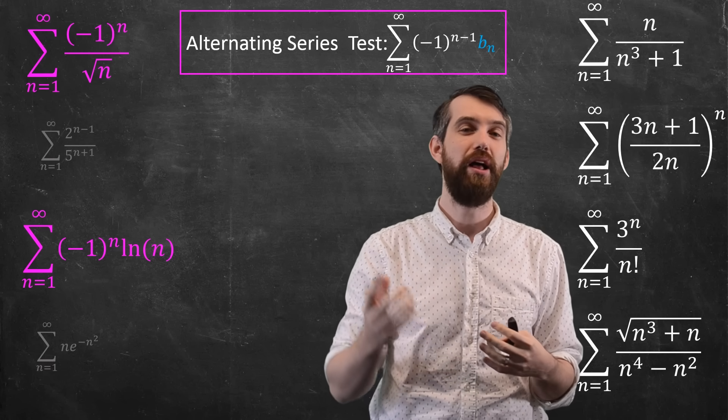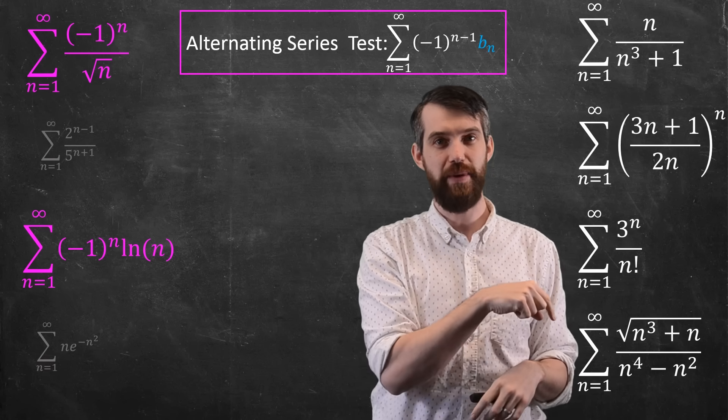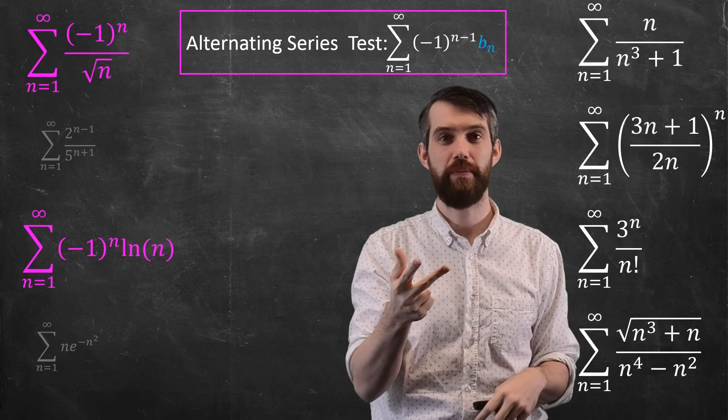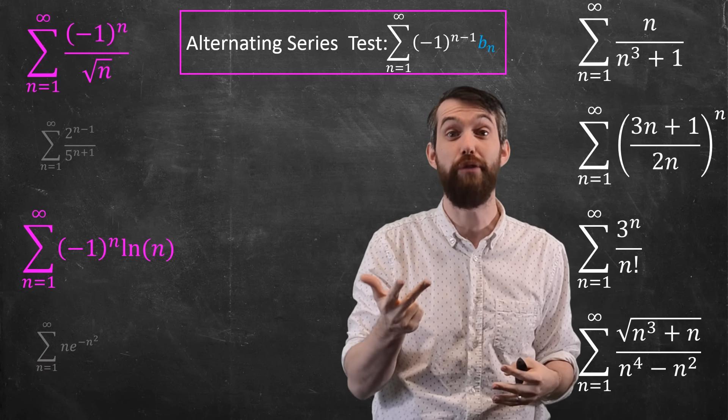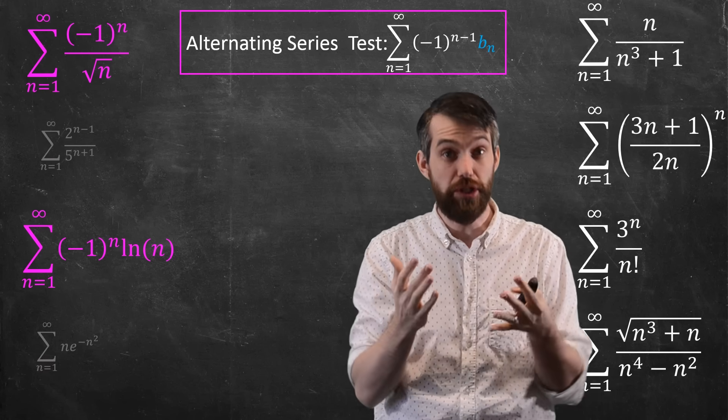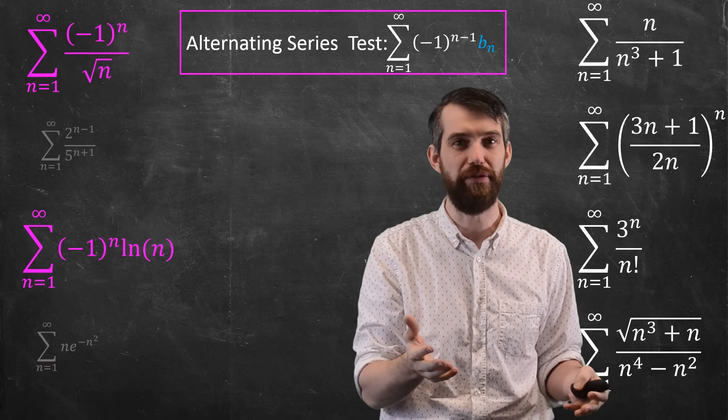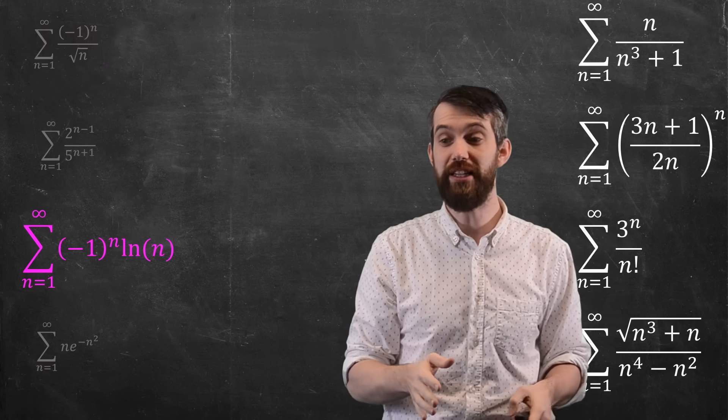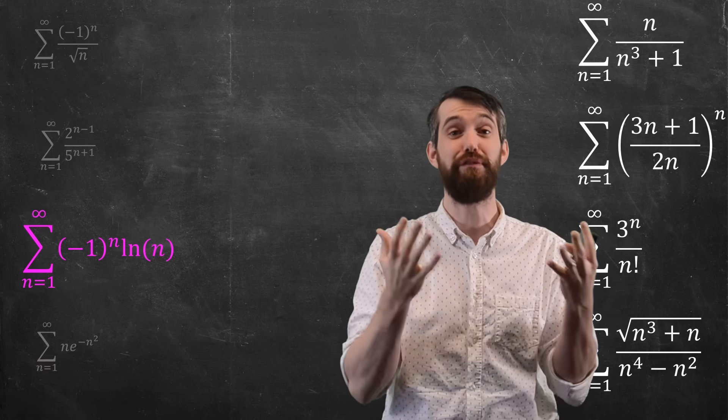Now, there was a condition on the alternating series test. It had this (-1)^n, but the other portion of it, whatever was left over, had to be positive, decreasing, and have limit zero. Now, the top one of these has those conditions. It's decreasing, positive, and the limit of 1/√n is zero. So the alternating series test applies to the top one, and it converges. But for the bottom one, ln(n) is positive, but it's not decreasing, and it doesn't have limit zero. So actually, it's only the top one that's going to be alternating series test. This one we still have to figure out.